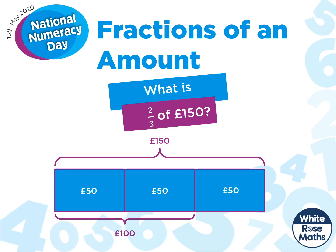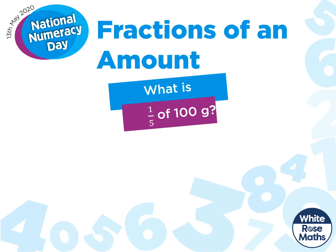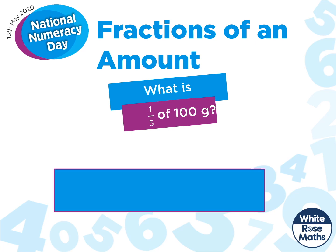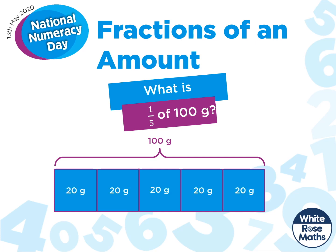What if we change the context slightly? What is one-fifth of 100 grams? Here's my whole, but this time it's going to be worth 100 grams and we're working in fifths. So let's split our bar into five equal parts. We just want one-fifth, so we need to do 100 divided by five equal parts to give us 20. One-fifth of 100 grams is 20 grams.